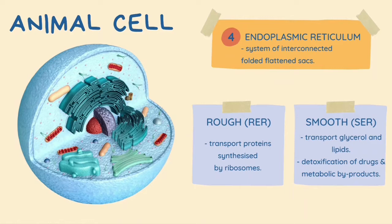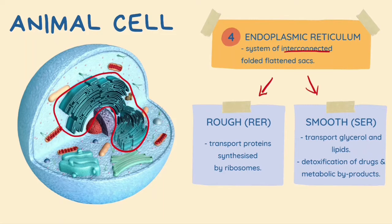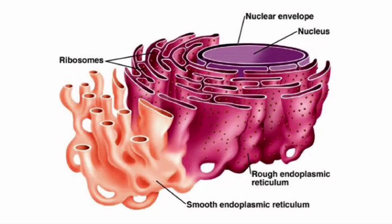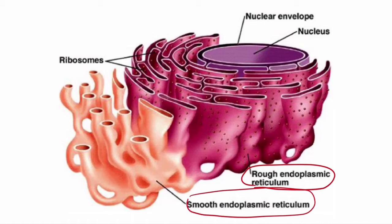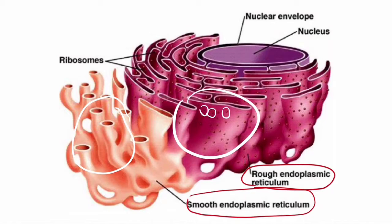Next is the endoplasmic reticulum. The endoplasmic reticulum is a system of interconnected folded flattened sacs. There are two types: the rough endoplasmic reticulum and the smooth endoplasmic reticulum. As you can see in the diagram, the rough endoplasmic reticulum has ribosomes attached to its surface, whereas the smooth endoplasmic reticulum has no ribosomes attached to its surface.